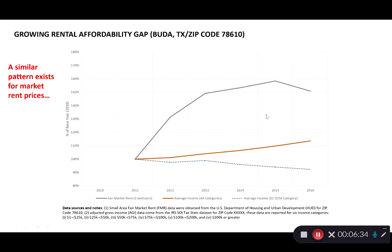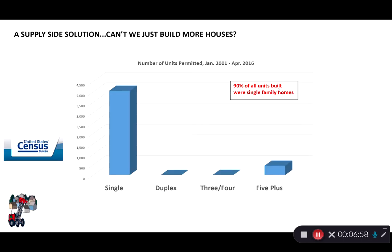We see a similar trend in rentals — rental prices increased dramatically while income increases more slowly. There was actually a decline in rental prices around 2015 because two big apartment complexes opened, dramatically increasing supply. Part of the problem is what's being built: 90 percent of all units built were single-family homes, with the biggest other chunk being those large apartment complexes.